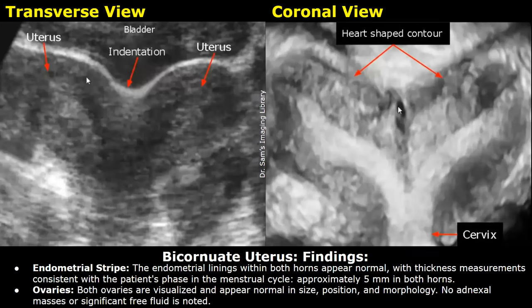Endometrial stripe: the endometrial linings within both horns appear normal, with thickness measurements consistent with the patient's phase in the menstrual cycle — approximately 5 millimeters in both horns. Ovaries: both ovaries are visualized and appear normal in size, position, and morphology. No adnexal masses or significant free fluid is noted.